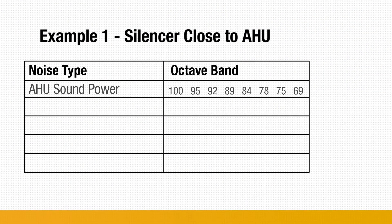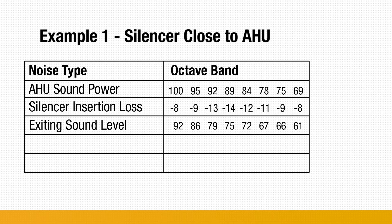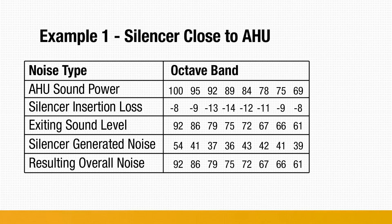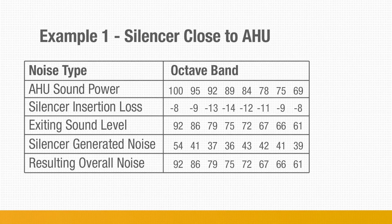In the first example, a silencer is located close to an air handling unit. The air handling unit's sound power levels are reduced across each octave band based on silencer insertion loss performance. The resulting noise levels represent the exiting sound levels of the silencer. When the silencer's generated noise levels are logarithmically added to these exiting noise levels, there is no contribution to the overall sound levels because there is more than a 10 dB difference between the generated noise and the exiting noise levels. As a result of this 10 dB difference, the silencer's generated noise is not a concern.